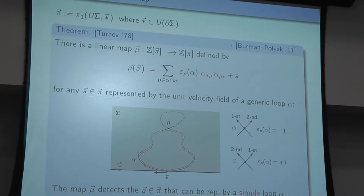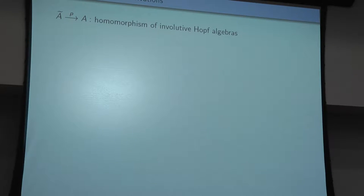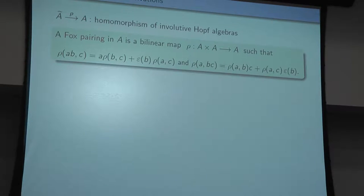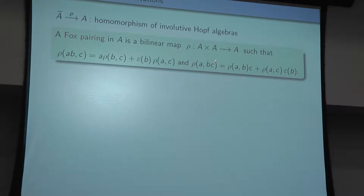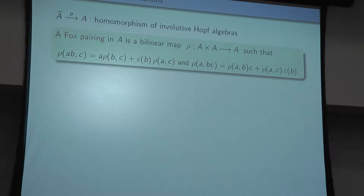To explain the relation between μ̃ and η, I introduce a little terminology from the world of Hopf algebras. Let ρ be a map of involutive Hopf algebras from Ã to A. Vladimir and I call a Fox pairing a binary map ρ from Ã to A which is a derivation in two senses: there is a derivation rule for the first argument and a derivation rule for the right argument. If you remember Stefan's talk from this morning, these are Fox derivations, left or right, depending on which argument you consider. It's the same thing as the Fox free derivative.